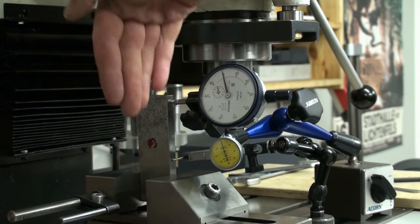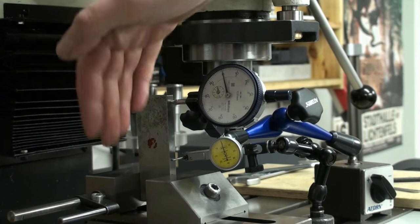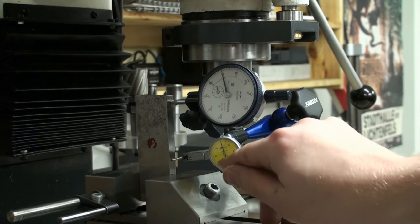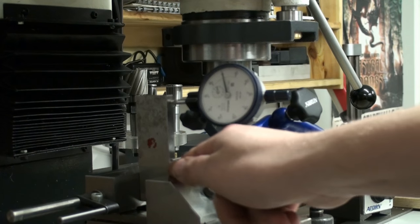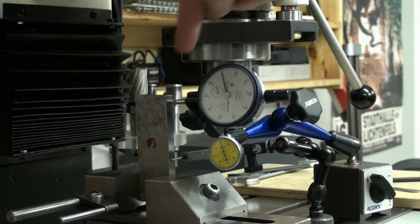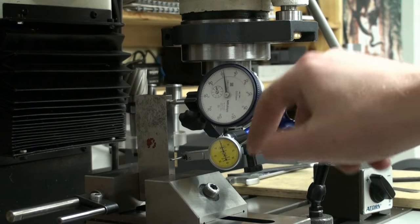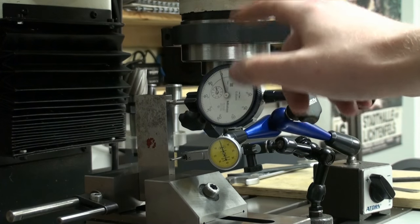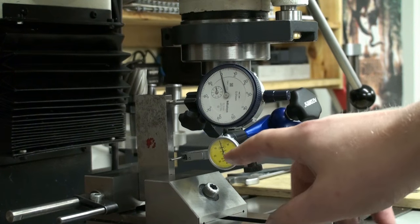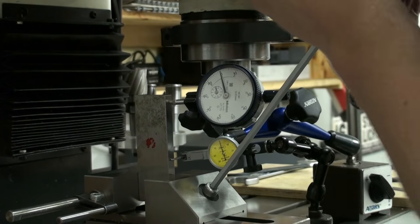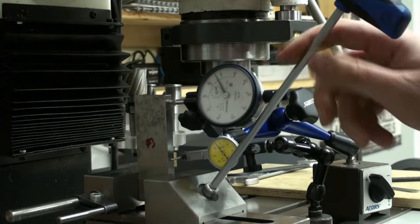Okay, I set up again the test to check how much a tall part would be pushed out of square. Again, the dial test indicator up against down here, dial indicator up against here, clamped the part very lightly, zeroed both indicators out, and now we will clamp down.